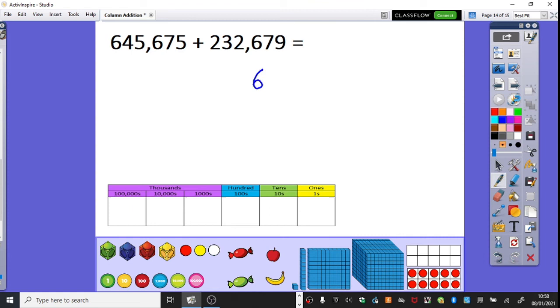So we've got 645,675. We've got some big numbers in here. We've got 232,679. And that's what we're going to be adding today. Okay. So,